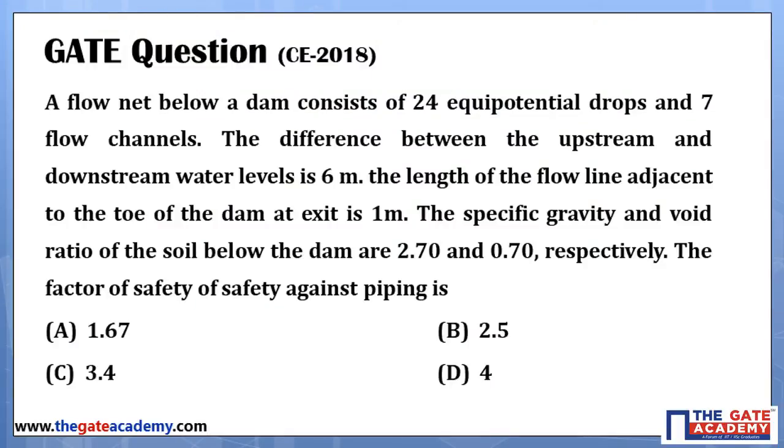The problem is: a flow net below a dam consists of 24 equipotential drops and 7 flow channels. The difference between the upstream and downstream water level is 6 meters.